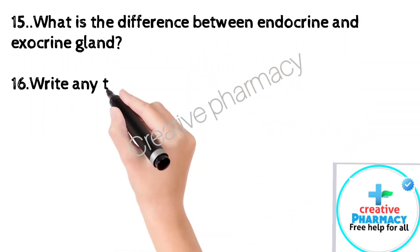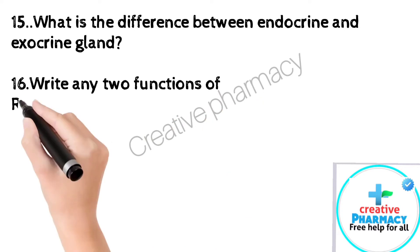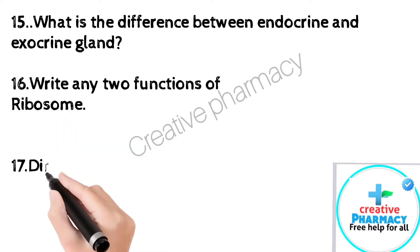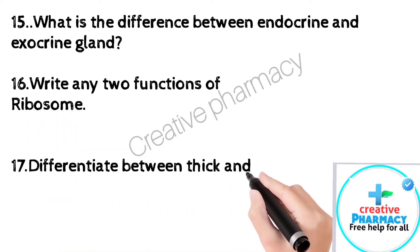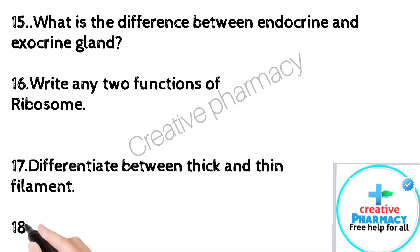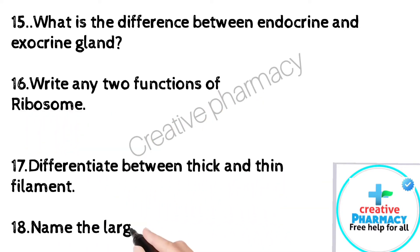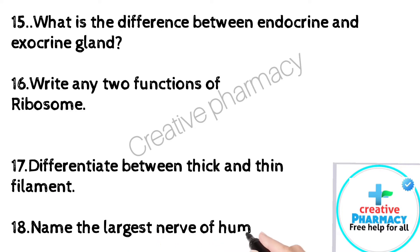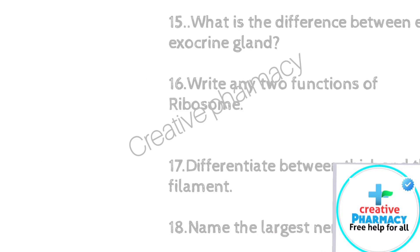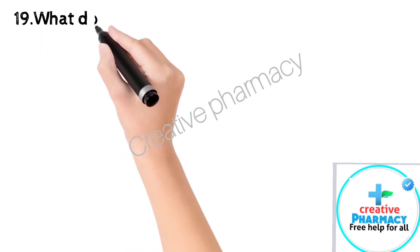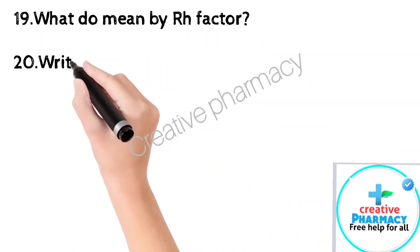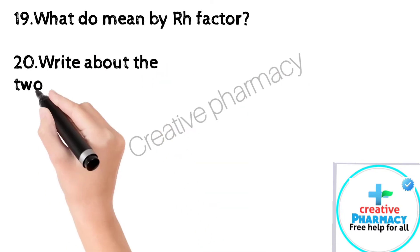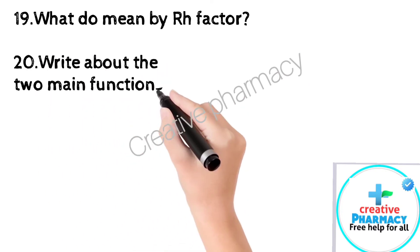16. Write any two functions of ribosome. 17. Differentiate between thick and thin filament. 18. Name the largest nerve of the human body. 19. What do you mean by rough endoplasmic reticulum? 20. Write about the two main functions of the lymphatic system.